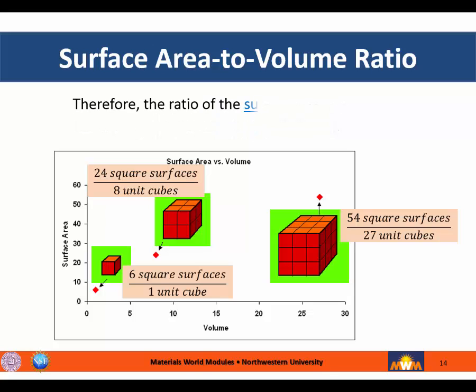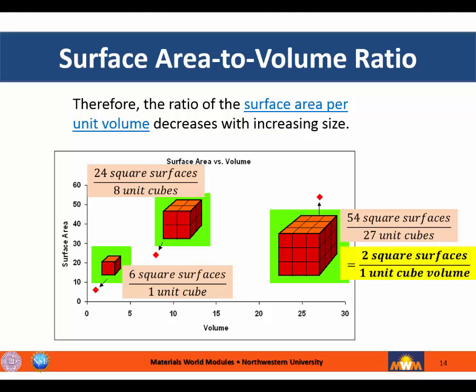Therefore, the ratio of the surface area per unit volume decreases with increasing size. In other words, as an object gets bigger, its surface area gets smaller compared to its volume.